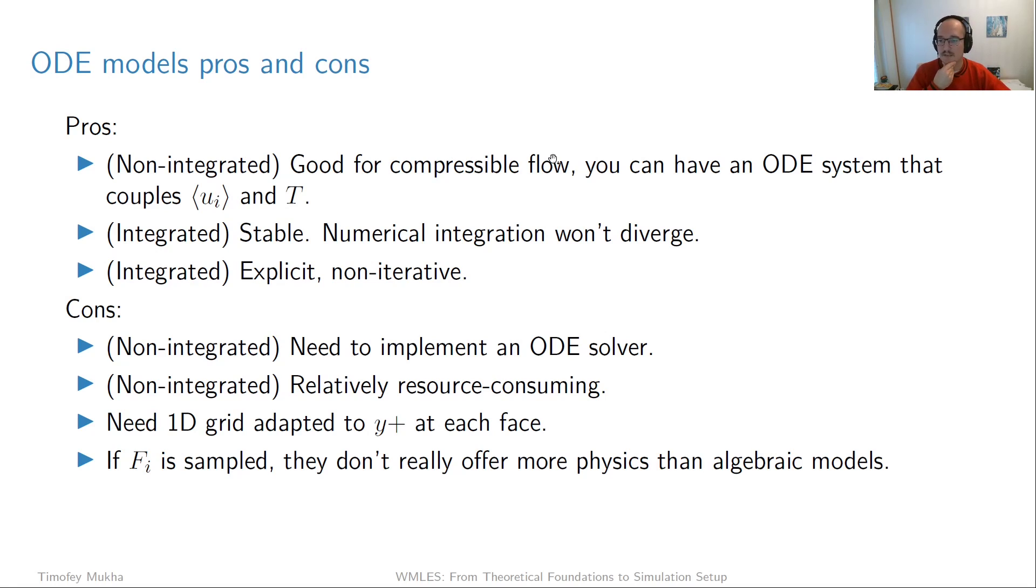Looking at the integrated versions, one good thing is that it's very stable. The only thing you need to do to compute tau wall is compute some integrals numerically. This is a very stable procedure—it's not going to diverge or do anything nasty. Also, it's non-iterative and explicit. There is no iterative method involved. You just compute numerically the two integrals and you have an explicit expression for the wall shear stress.